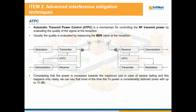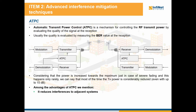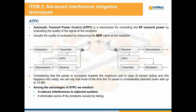Considering that the power is increased towards the maximum just in case of severe fading, and this happens very rarely, we can say that most of the time the TX power is considerably reduced, even with up to 15 dB. ATPC has many benefits, out of which we mention that it reduces interferences to adjacent systems, it eliminates some of the problems caused by fading, it improves the frequency reutilization ratio, and it reduces the power consumption.